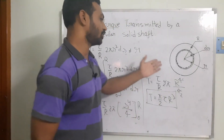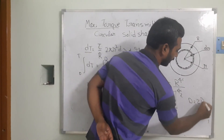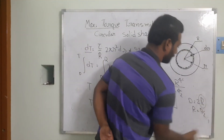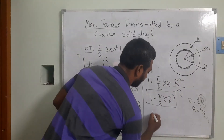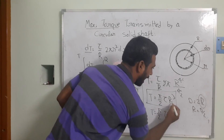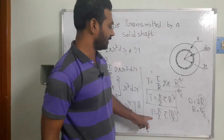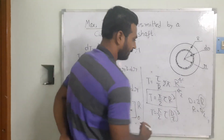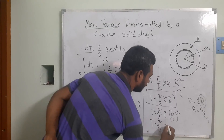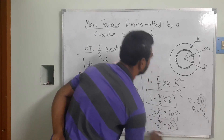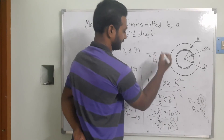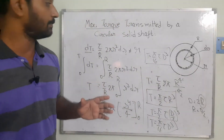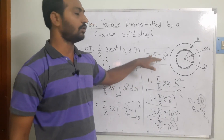Since diameter d equals 2R, we have R equals d/2. Substituting into the equation, T equals (π/2)·τ·(d/2)³. Simplifying, we get T equals (π/16)·τ·d³. So the maximum torque transmitted by the shaft is T equals (π/16)·τ·d³.